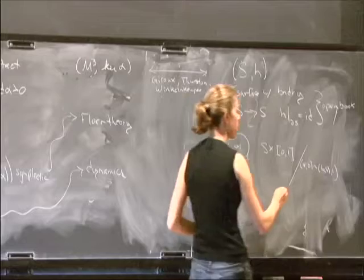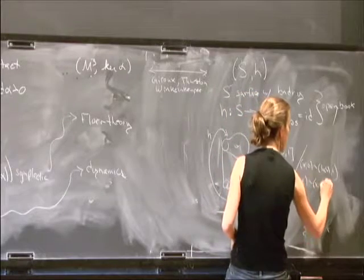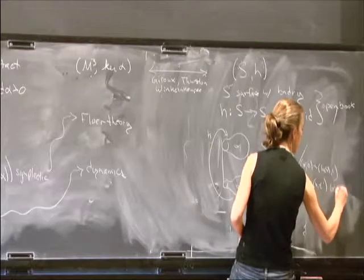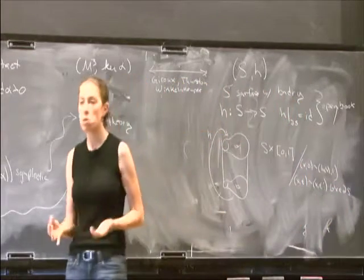And then you make the further identification that xt is identified with xt prime for all x in the boundary of the surface. So this gives you a closed three-manifold.